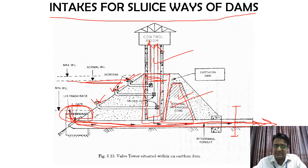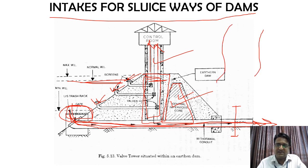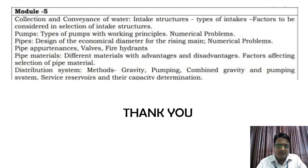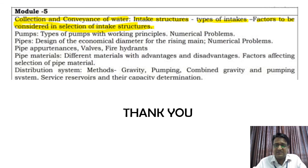In summary, intake structures ensure that water from any source — river, pond, lake, or stream — is safely withdrawn and delivered to the water treatment plant at all times. In this lesson covering Module 5, Collection and Conveyance of Water, we have studied intake structures, types of intakes, and factors to be considered for selection of intake structures. In the next class, we will cover pumps, pipes, and various other aspects.